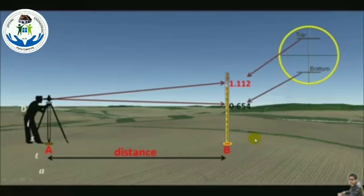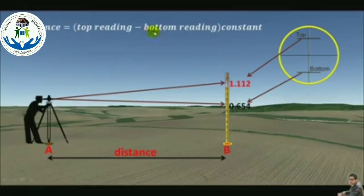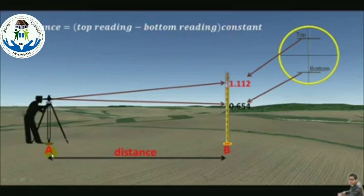Now we can use a nice formula: the top reading minus the bottom reading times the constant will be the horizontal distance between point A and point B.